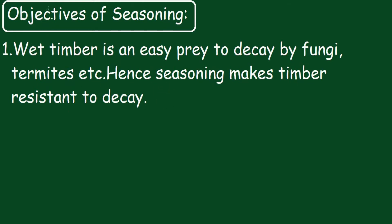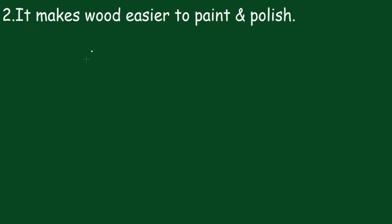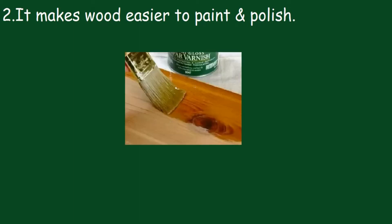An example of decaying wet timber is shown here — wood getting decayed due to not being seasoned or not being seasoned properly. Seasoning also makes wood easy to paint and polish, as shown in the diagram where seasoned wood is easily polishable.